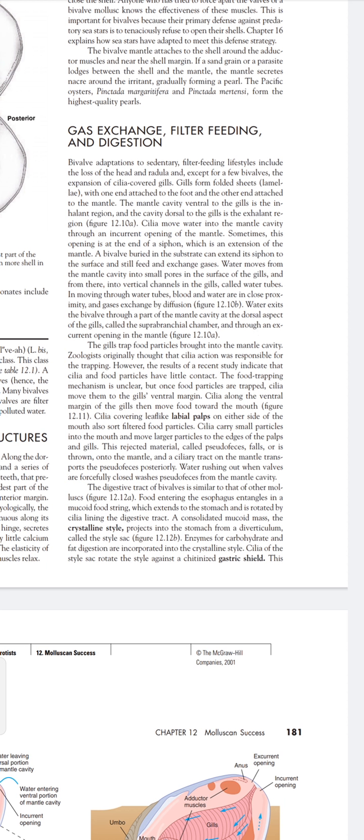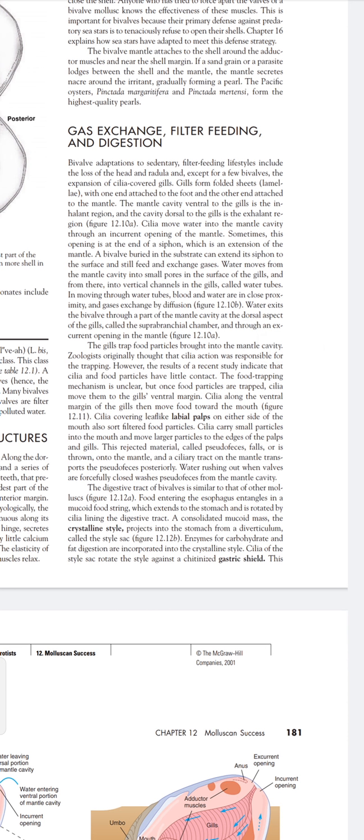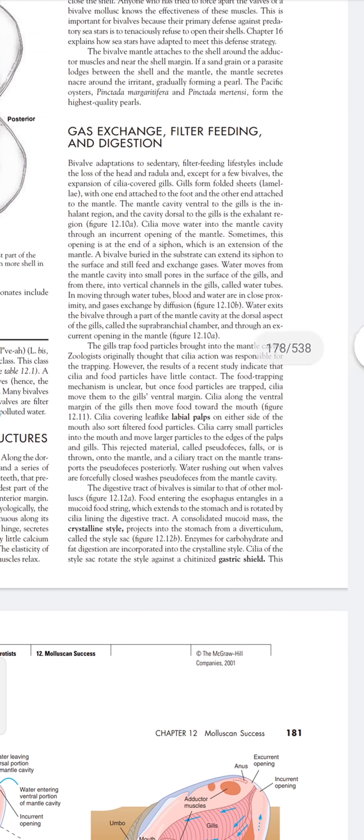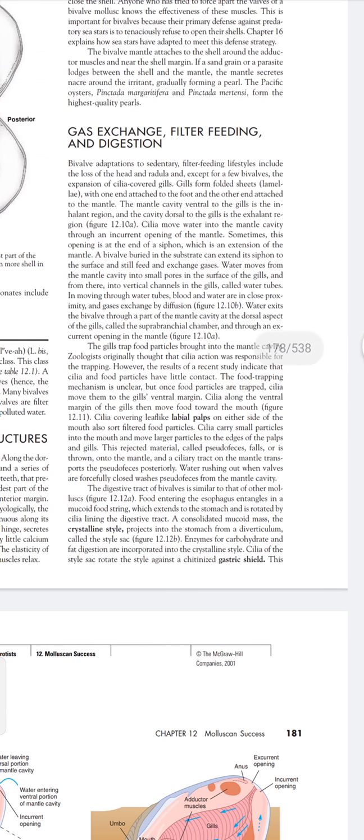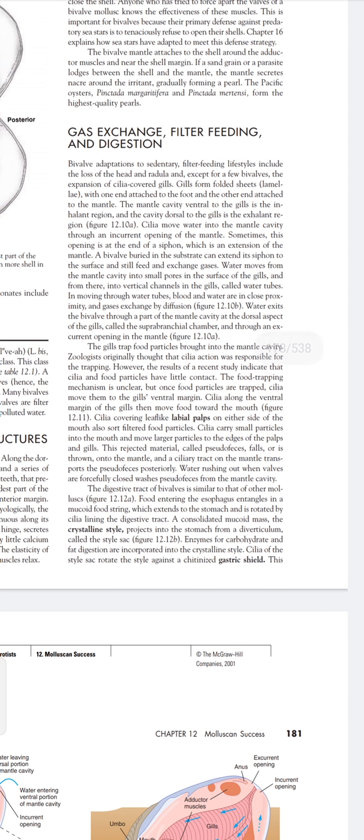After esophagus, the food enters into the stomach. The stomach has a diverticulum which is called the style sac. This opens into the stomach, and the crystalline style, which is also called the mucoid rod, moves into the stomach from the style sac. Enzymes for the process of the digestion of carbohydrates and fats are present in the crystalline style.